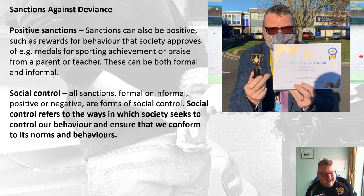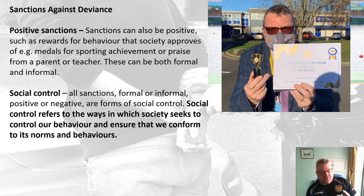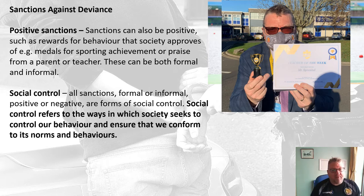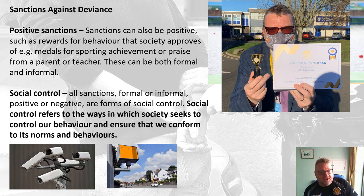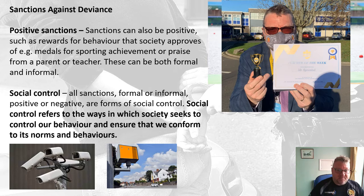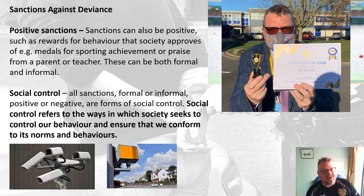Social control will feature massively in Unit 4, where we look at the different institutions within the criminal justice system that ensure we toe the line and society behaves as we want it to. Social control is the way in which our behaviour is controlled so that we conform to the norms and values of society. The very fact that we have security cameras or speed cameras controls our behaviour — if I'm going over the speed limit and I see a speed camera, I slow down. It's getting me to abide by the norms, values, and laws of our society.